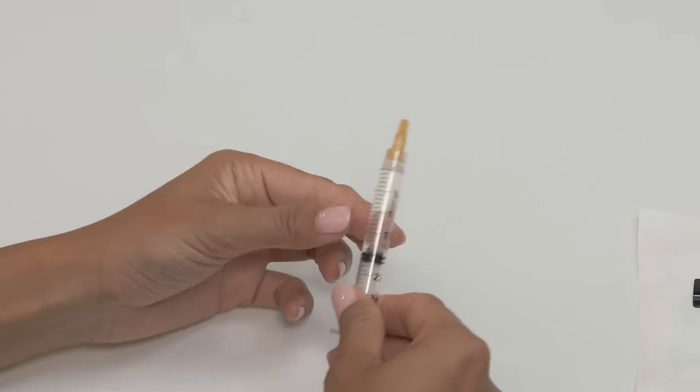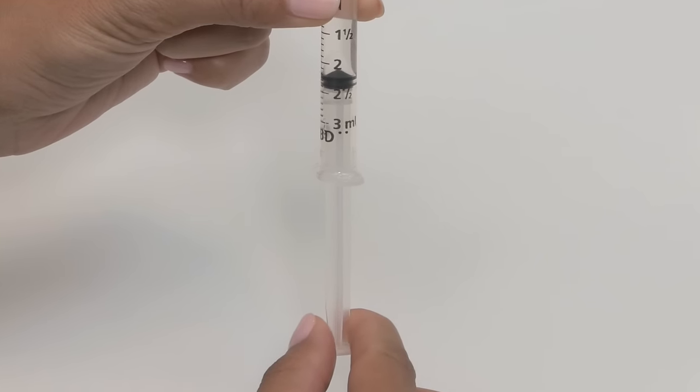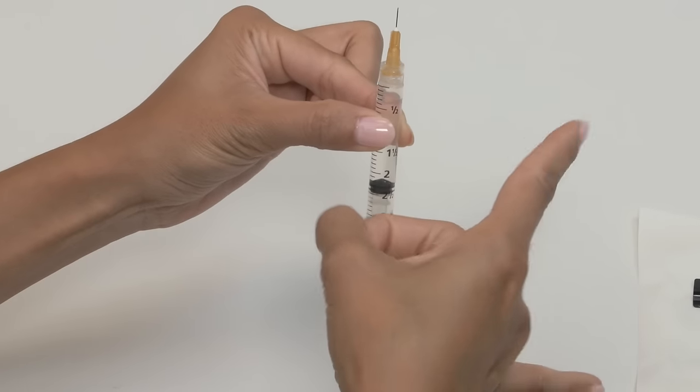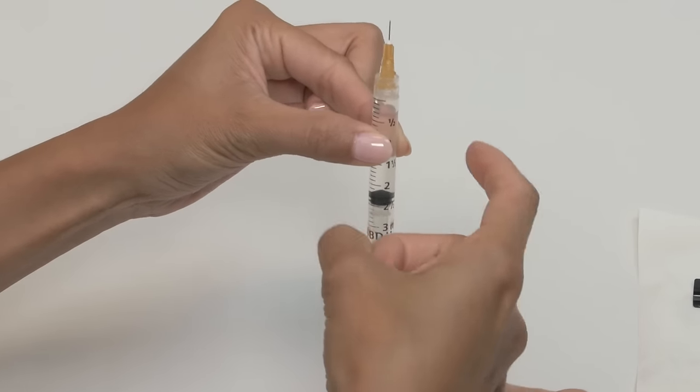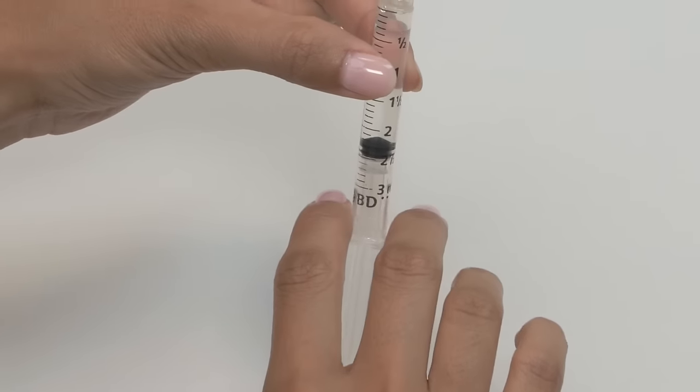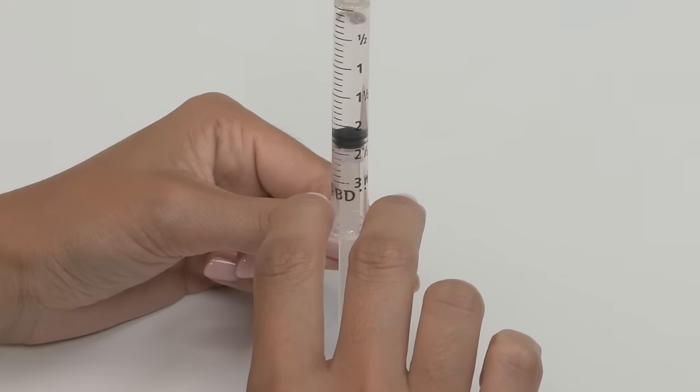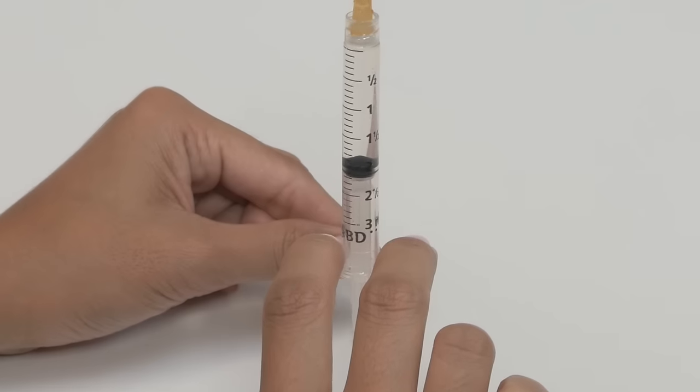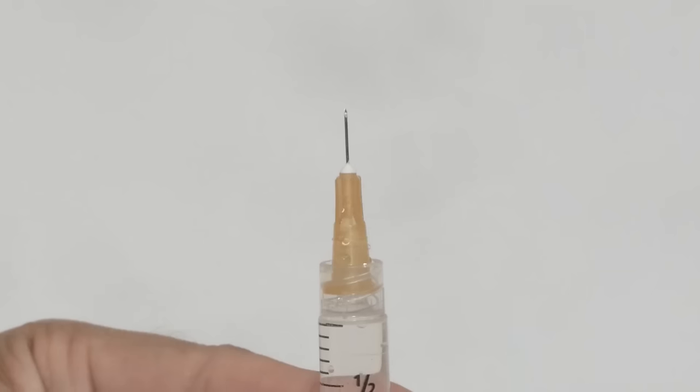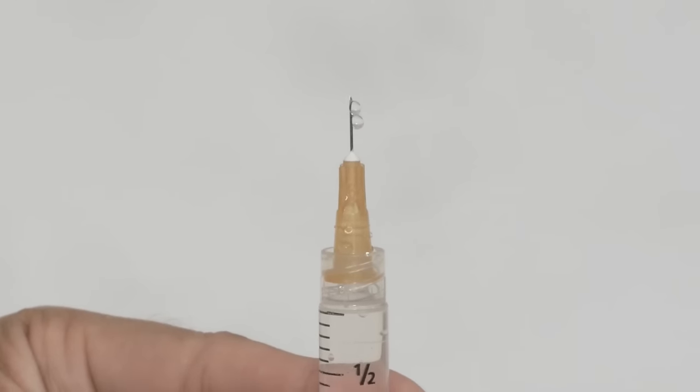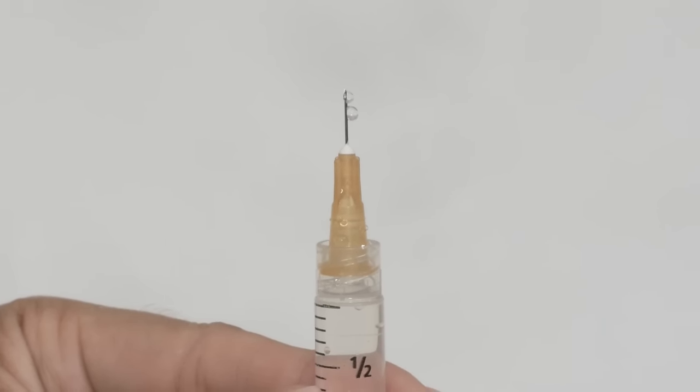Turn the syringe upside down and pull back some on the plunger. Flick or tap the syringe to release any air bubbles so that they rise to the top. Once you've gotten all the air bubbles loose, slowly press up on the plunger to remove the air from the syringe. A common place for air bubbles to get stuck is in the orange needle hub, so be sure to inspect that area. Stop when you see drops of insulin at the tip of the needle.